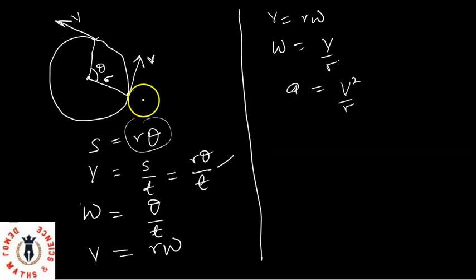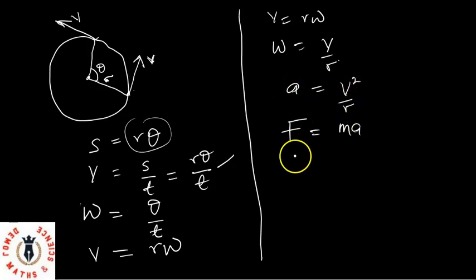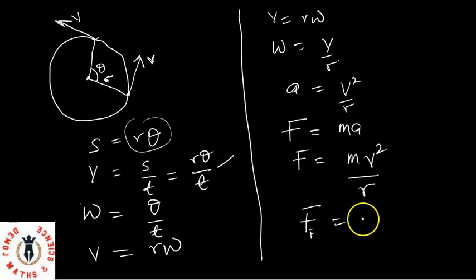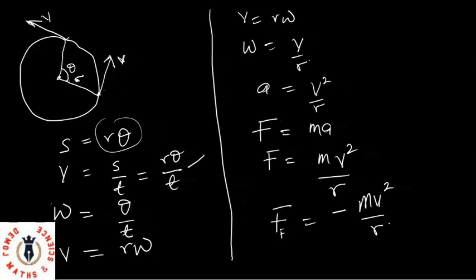The two forces that keep this object in its path are the centrifugal force and the centripetal force. The centripetal force is directed towards the center of the circle, while the centrifugal force pushes the object away from the center. My centripetal force equals M times A, and A equals V squared over R — so centripetal force equals MV squared over R. The centrifugal force, which is in the opposite direction, equals negative MV squared over R. With that, we have seen velocity, acceleration, and centripetal and centrifugal forces. Let's look at some examples.